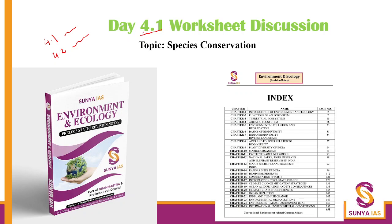I will have two worksheets here. One for day 4.1, which is right now. In this, you should read Chapter 7, Indian Biodiversity Landscape, and also about plant diversity of India, protected area networks in Chapter 11. Then quickly glance through Chapter 12, National Parks, Tiger Reserves, etc. Then Chapter 13, Major Wildlife Sanctuaries of India. And Chapter 16, conservation efforts. There are a lot of chapters to be done, which should be complemented with your lectures, both 4.1 and 4.2. Because a lot of species — static and current — are very important for you.